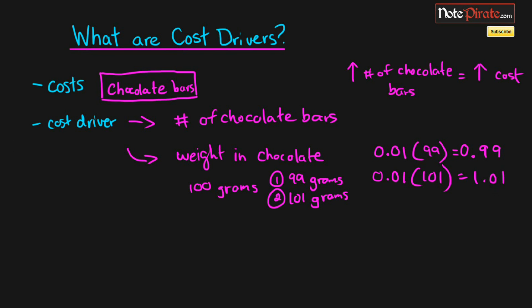Each chocolate bar was $1, but our price was off by a penny in both scenarios. So you can see that some cost drivers actually work better than others. And I can give you probably even a better example of a less effective cost driver: maybe the number of nuts in the chocolate bar.